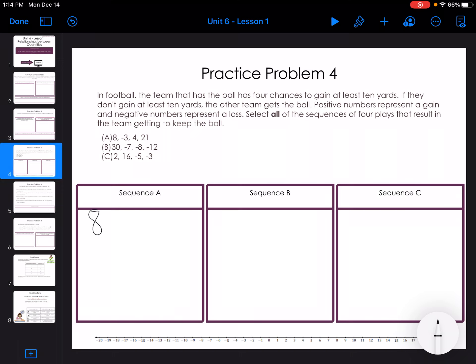So I have 8, negative 3, 4, 21. I'm going to add all my positive numbers together. So it's 12, 12, 13. So 33 minus 3, that's 30 yards. So A works.